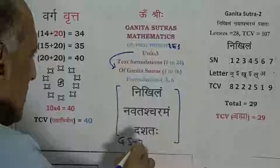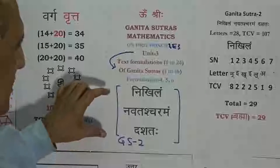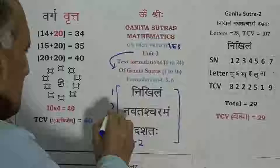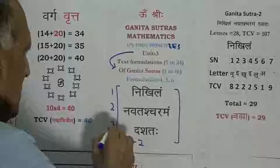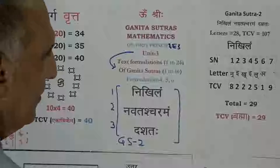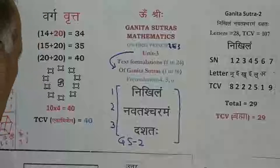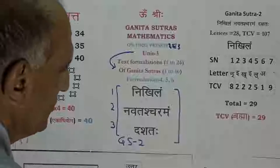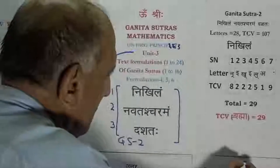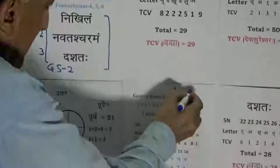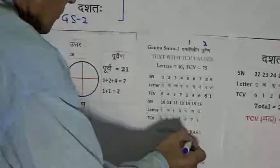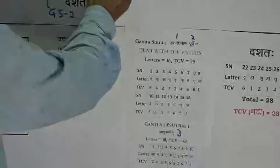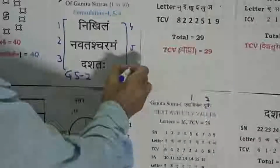This is the text of Ganita Sutra 2, consisting of 3 formulations. Up till now we have already been through the text of Ganita Sutra 1 — Eka Adhiken Purve — as well as through Ganita Sutra 1.3. So it brings us to formulations 4, 5 and 6.